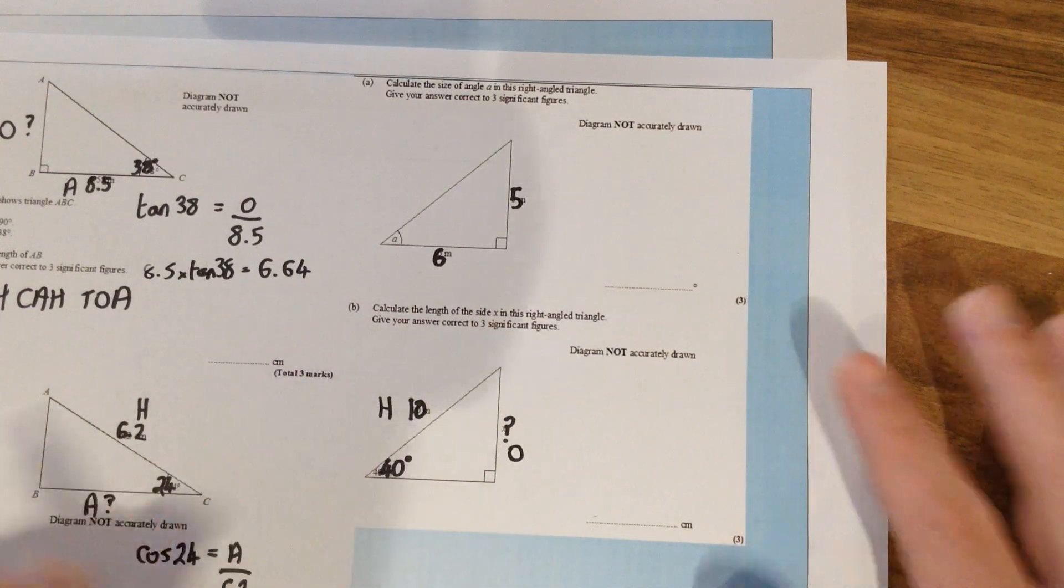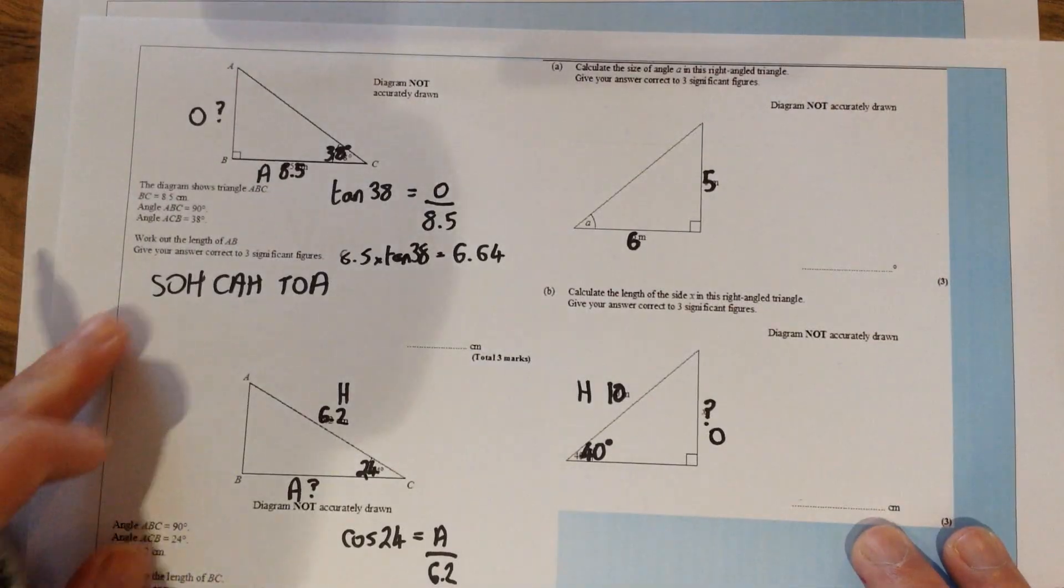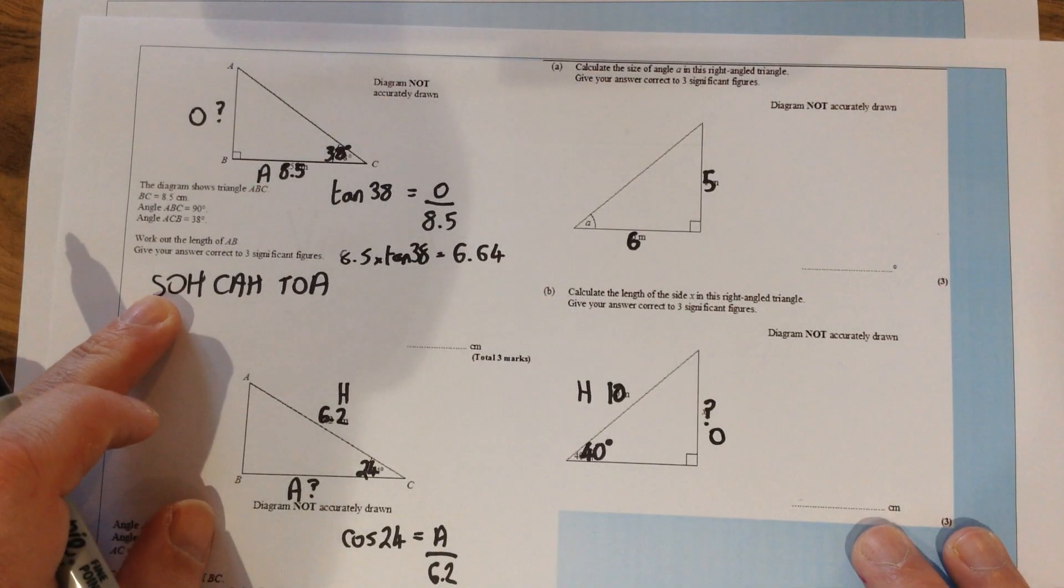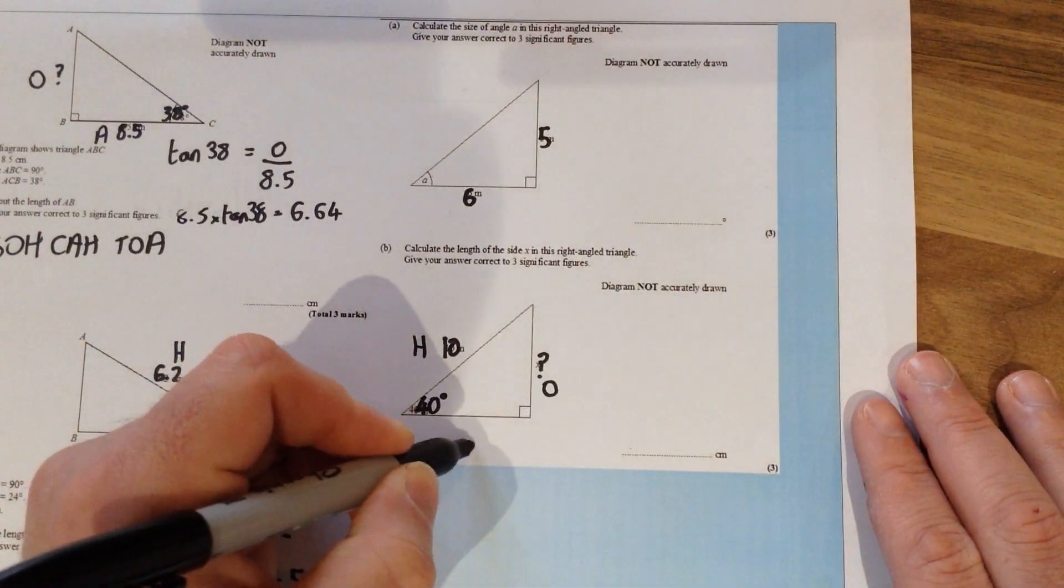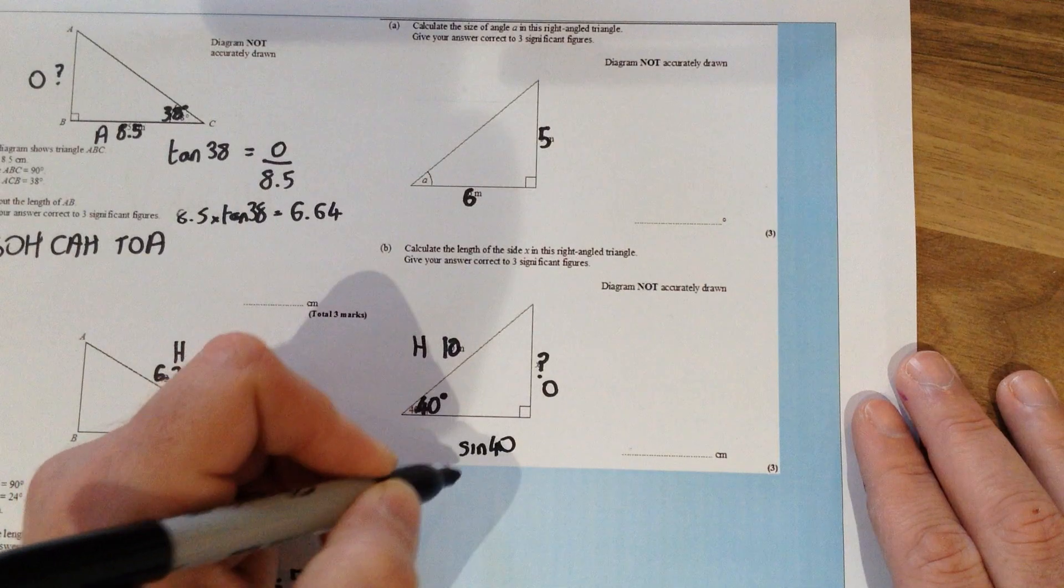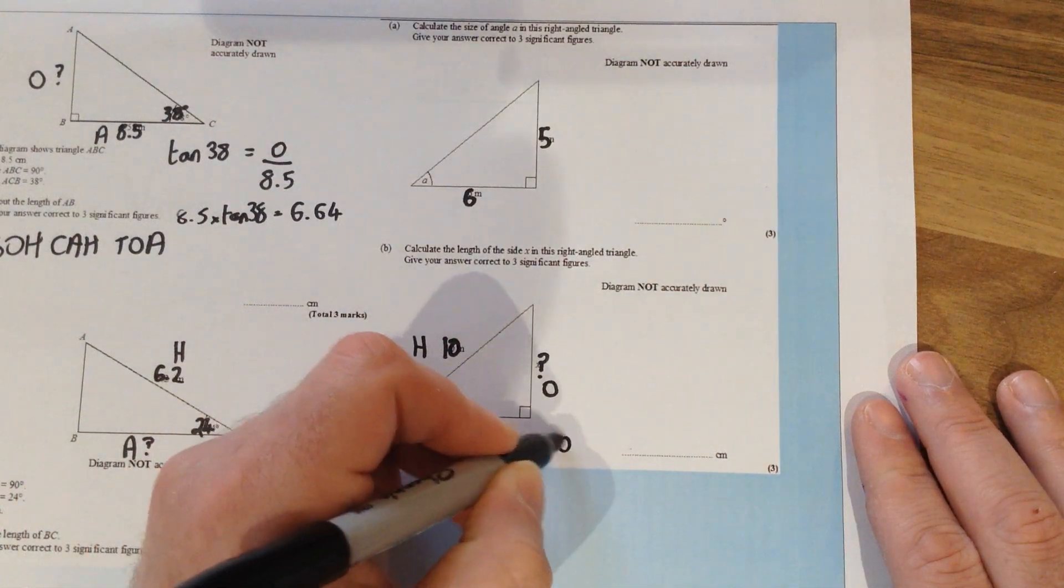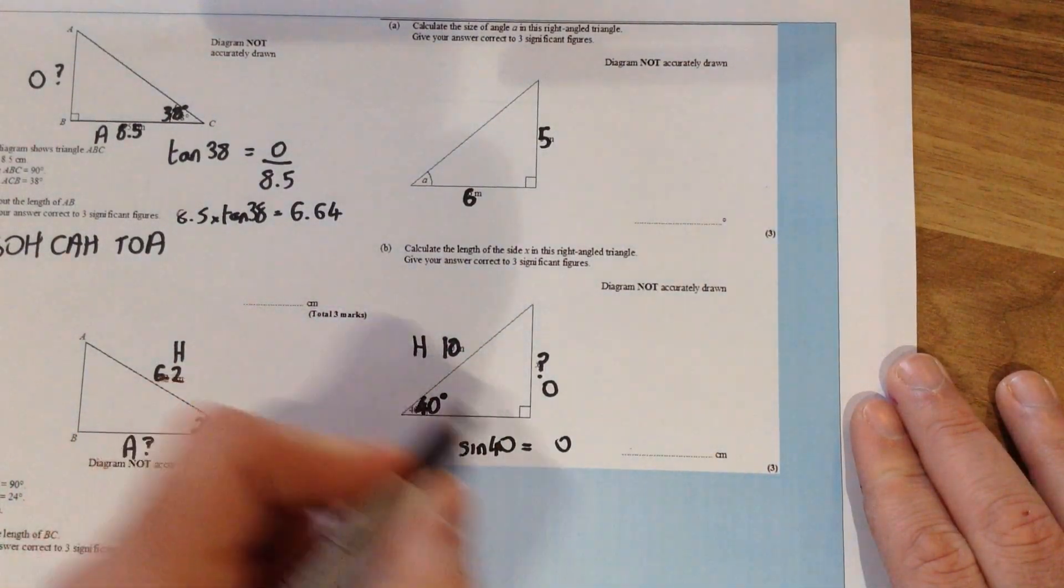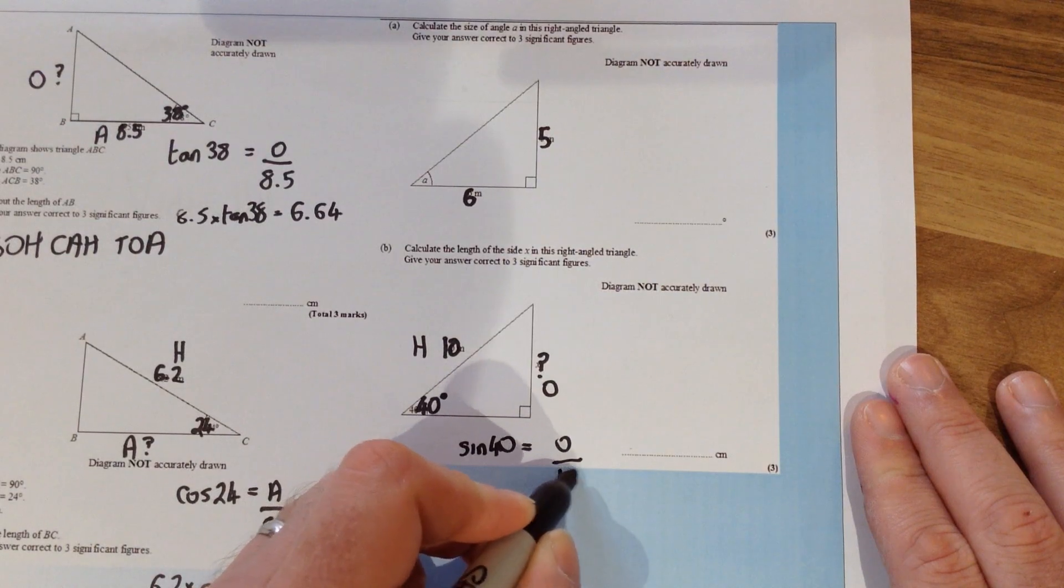So O and H are linked with sine because that's a letter that just goes in front of the O and the H. So we've got sine of 40 is equal to the opposite side which we don't know divided by the hypotenuse which is 10.